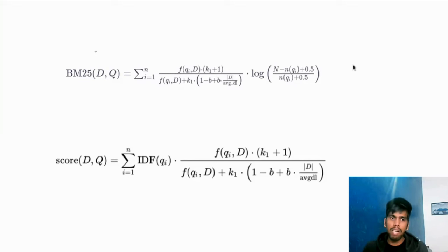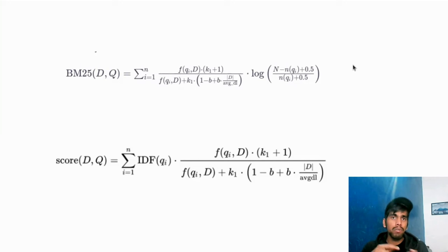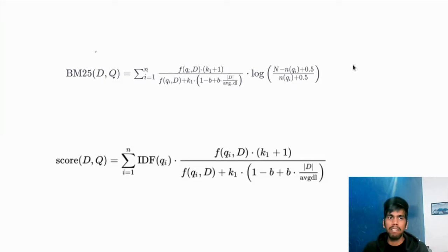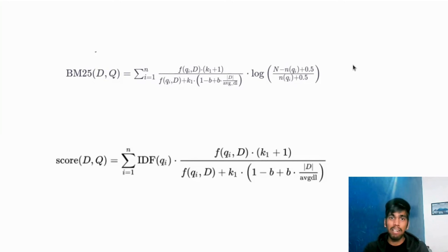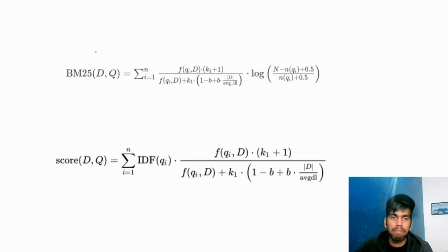TF-IDF stands for Term Frequency, and IDF stands for Inverse Document Frequency. Using this algorithm, we are able to extract the number of times a keyword has been repeated. There are a few more terms used to calculate the BM25 score, but let's understand the intuition behind it before we dive deep.